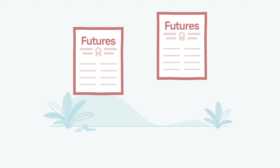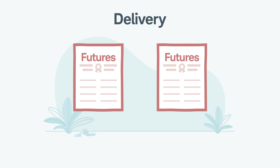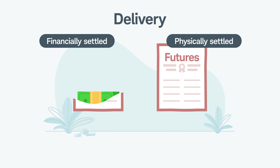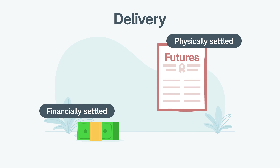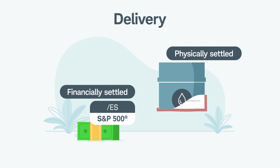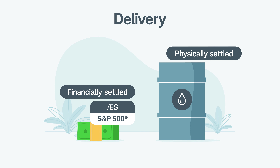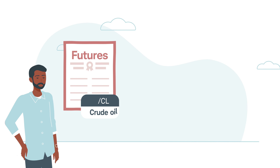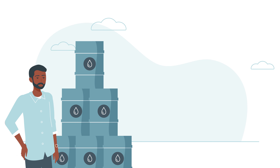Finally, there's delivery. Contracts are either financially settled or physically settled. Financially settled futures contracts expire directly into cash at expiration — this includes products like the e-mini S&P 500 index futures. Physically settled futures contracts expire directly into the physical commodity, such as crude oil. For example, anyone long a contract in crude oil at expiration will receive 1,000 barrels of crude oil.